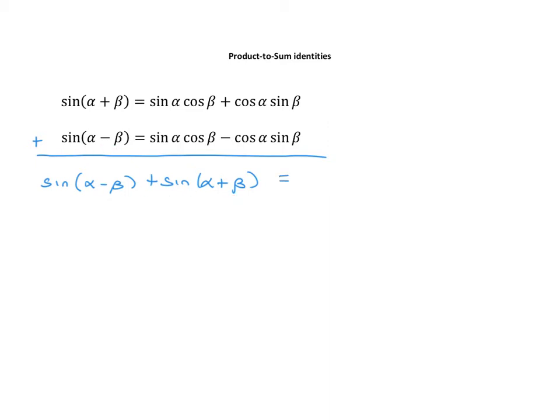On the other side of my equation, I get two sine alpha cosine betas. And like I said before, this stuff is zero. So if you want, you put plus zero.